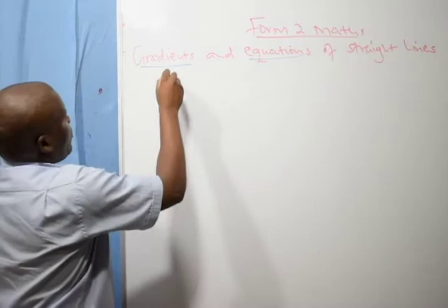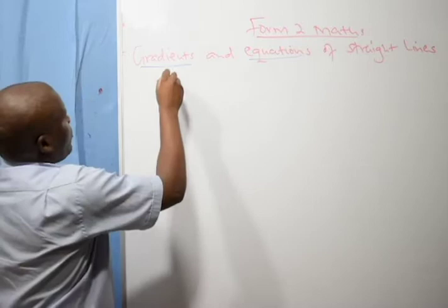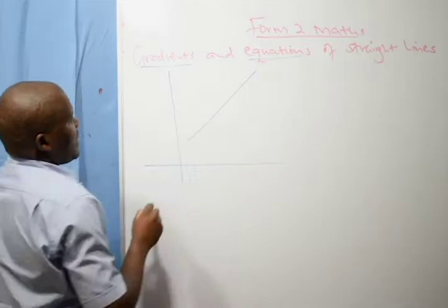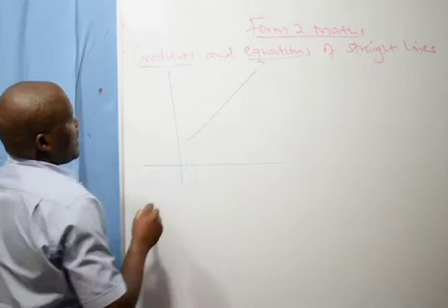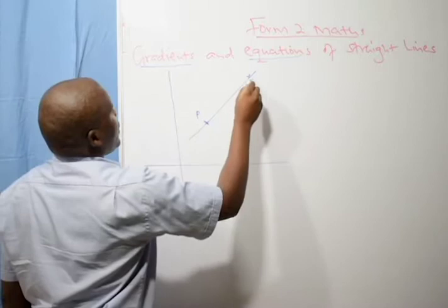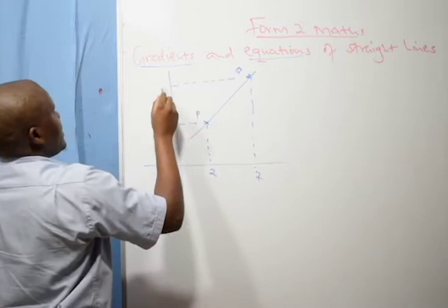In Form 1, you are drawing straight lines when looking at solving simultaneous equations using the graphical method. If I have a line here, let me assume that is my line passing through two points P and point Q. We assume this is two, this is four, this is seven, and this is eight.